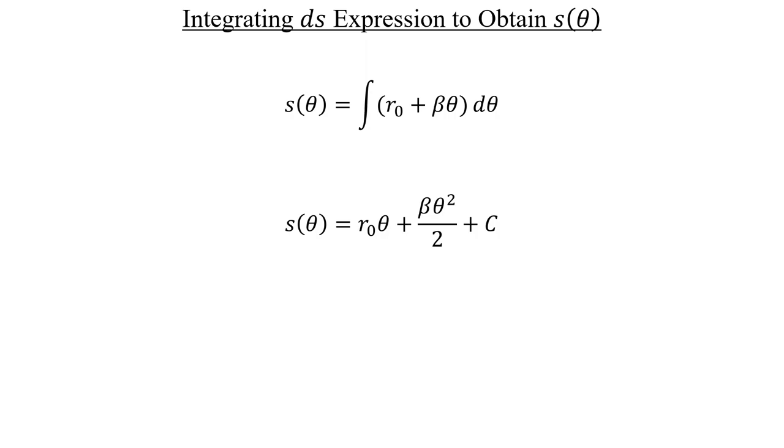Since our integral didn't have upper and lower limits, we are required to include a constant of integration, which is this capital C here. And we can figure out the value of C by using the initial conditions of this expression. Before the CD even starts playing, the starting angle for theta is 0. So let's plug in 0 everywhere that we see theta in this second line.